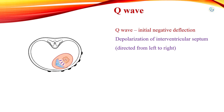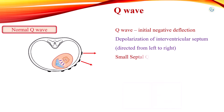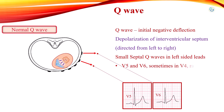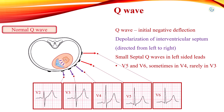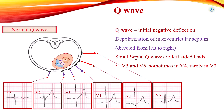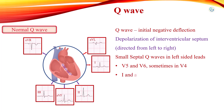Therefore, small septal Q-waves can normally be seen in left precordial leads V5, V6, and sometimes V4. Q-waves are not seen in the right precordial leads V1 to V3, since the direction of septal depolarization is the same as the direction of these leads. Q-waves may also be observed in leads I and AVL, which also direct towards the left.